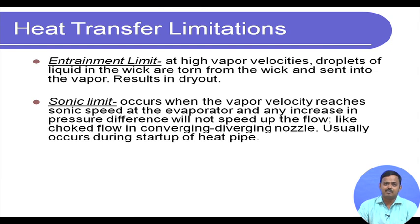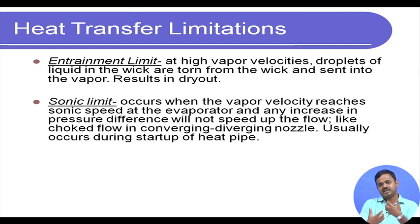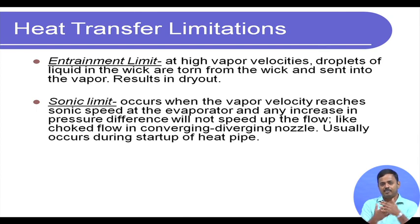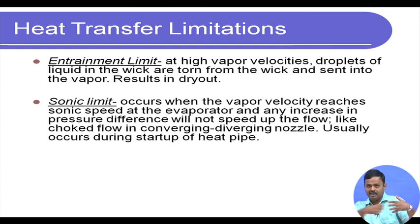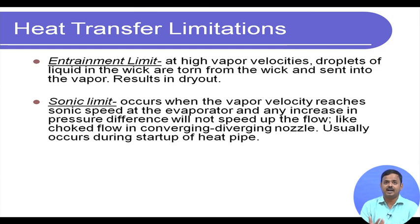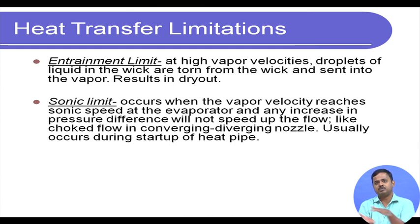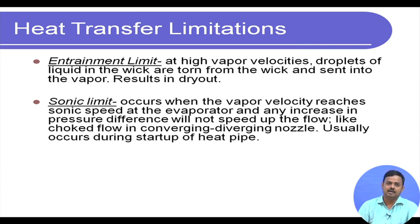The entrainment limit occurs at very high vapor velocities through the core. Because of friction between the liquid flowing through the wick and the vapor flowing through the core, the interface force can cause the fast-moving vapor to drag droplets of liquid from the wick, tearing them off and entraining them along the vapor core toward the condenser section.